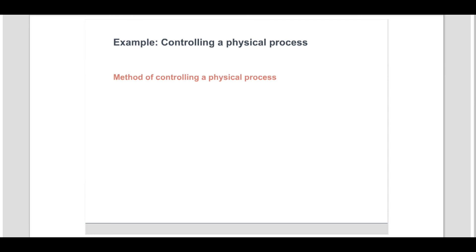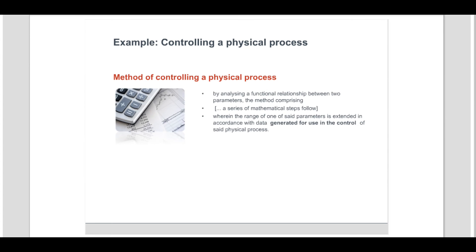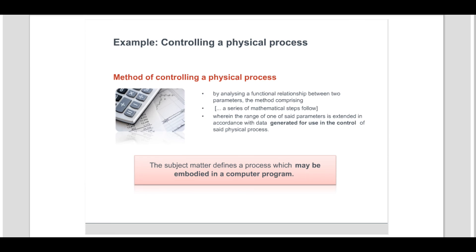In this example, a method of controlling a physical process is defined by the application of a mathematical method which results in the control of that physical process. The subject matter is directed to the control of a process which does not fall under the list of exclusions in Article 52.2. Indeed, the control function defined by the mathematical method, embodied as a computer program, is capable of causing a technical effect when run on a computer and therefore has technical character.